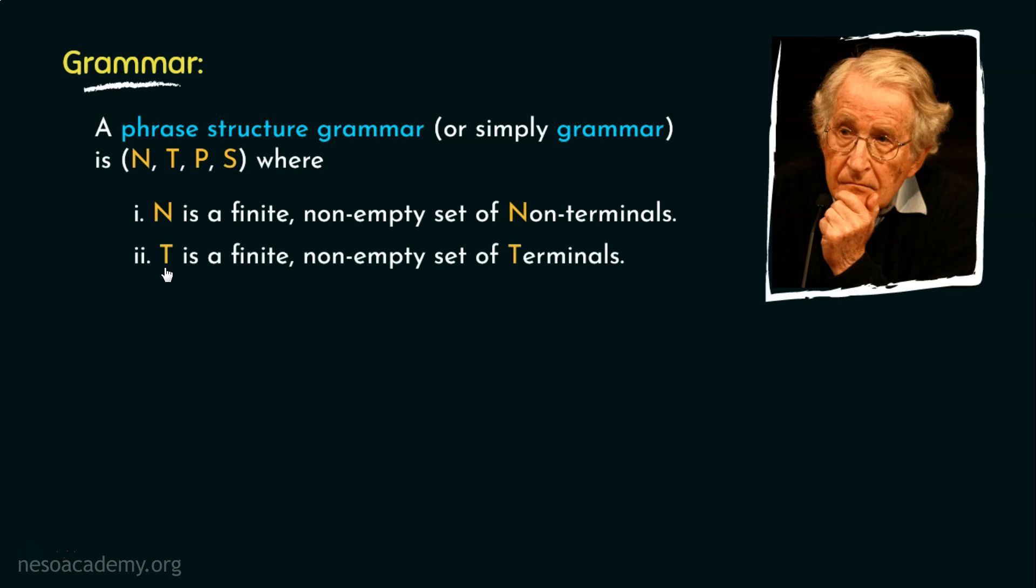Then, T is a finite, non-empty set of terminals. Here also, the terms finite and non-empty are specified for the same reasons. Now, N intersection T will result in phi, that is the set of non-terminals and the set of terminals are two disjoint sets and don't have anything in common.